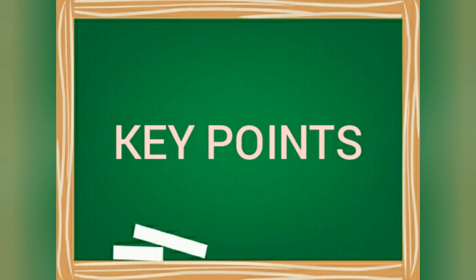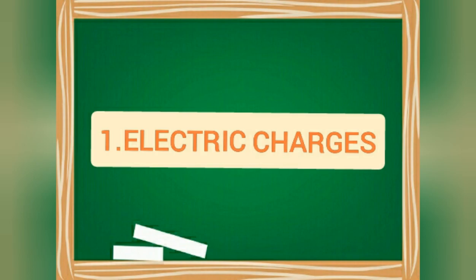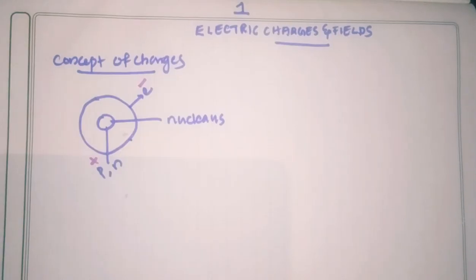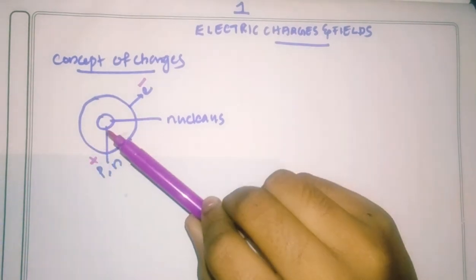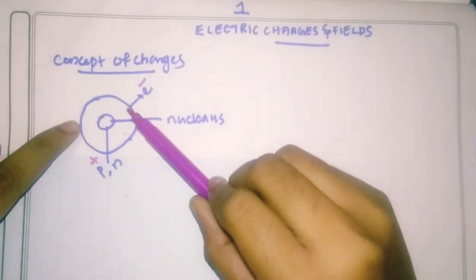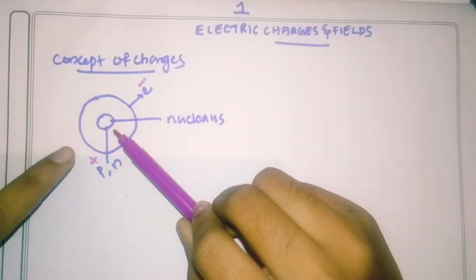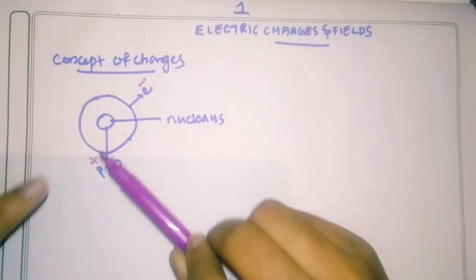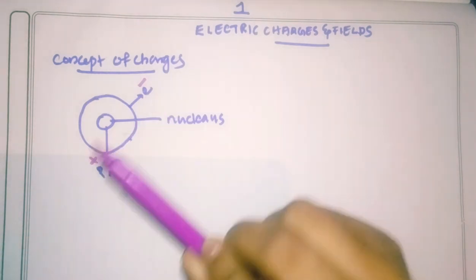Let's start the first chapter: Electric Charges and Fields. The first concept is the concept of charges. This is the atom. The atom has two circles — the first circle is the orbit, and in the center is the nucleus. The nucleus contains the proton and neutron, and the orbit contains the electron.